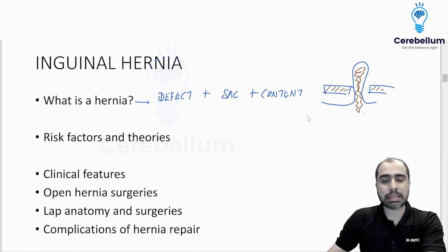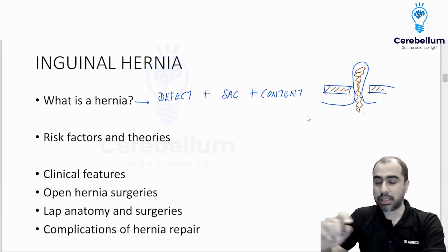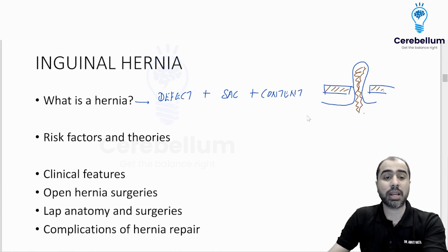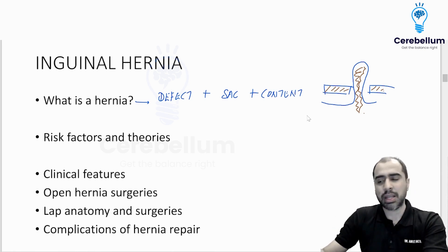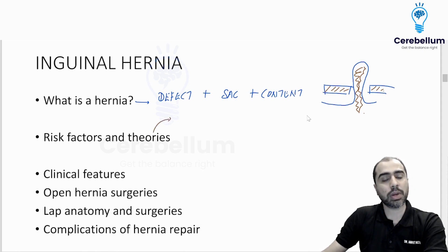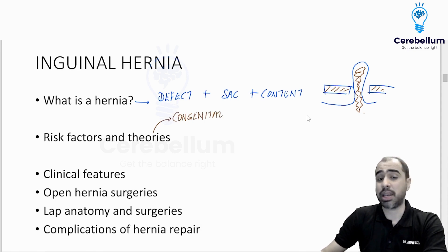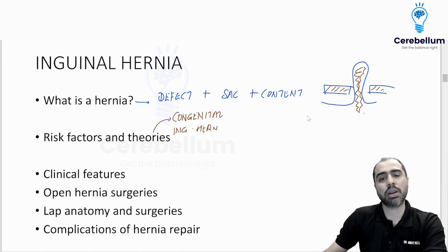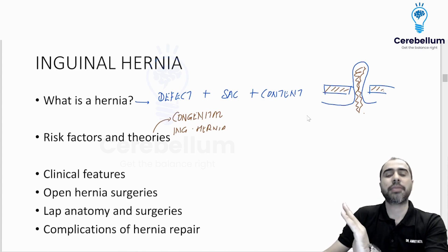Now, who gets a hernia? What are the theories? This has never been asked but it was there in the 2018 edition of Bailey and in the last December 2022 edition of Bailey. There are some theories as to who gets a hernia. There is one theory which explains why someone gets a congenital inguinal hernia — this is the one I expect them to ask.